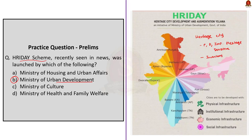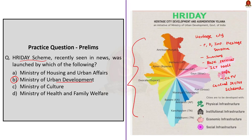HRIDAY aims to create an inventory of the city's heritage for urban planning and development. It emphasizes improving basic services such as sanitation facilities, water taps, and streetlights, and promotes the use of modern ICT tools for making cities informative, and enhances security measures like CCTV surveillance. The scheme is funded entirely by the Government of India — it is a central sector scheme implemented from December 2014 to March 2019. It covers heritage cities including Ajmer, Amaravati, Amritsar, Badami, Dwarka, Gaya, Kanchipuram, Madurai, Puri, Varanasi, Vellankanni, and Warangal.